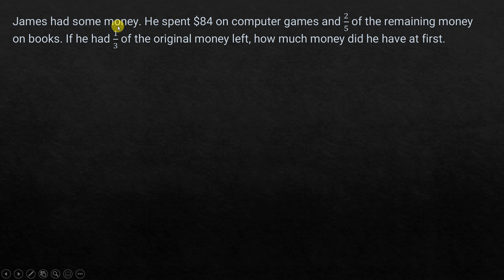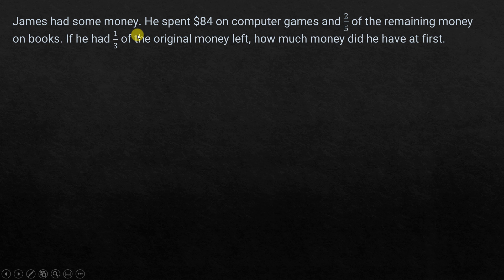James had some money. He spent $84 on computer games and two-fifths of the remaining money on books. If he had one-third of the original money left, how much money did he have at first? In algebra, we represent the unknown quantity with letters. Let's assume the money that James had is X.